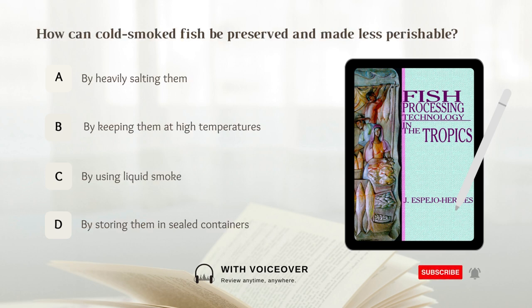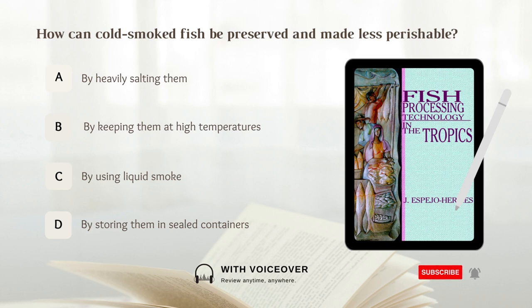How can cold smoked fish be preserved and made less perishable? A. By heavily salting them. B. By keeping them at high temperatures. C. By using liquid smoke. D. By storing them in sealed containers. Answer: A. By heavily salting them.